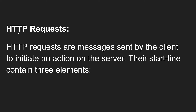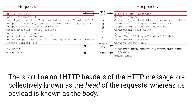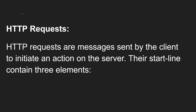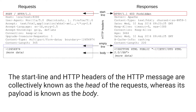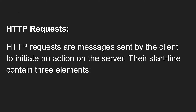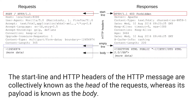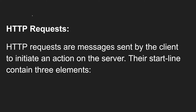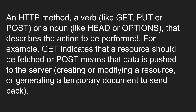The starting line of an HTTP request contains three elements. You can see: first is the method like 'POST', second is the path like '/', and third is the HTTP version like 'HTTP/1.1'. The first element is an HTTP method — a verb like GET, PUT, or POST, or a noun like HEAD or OPTIONS.